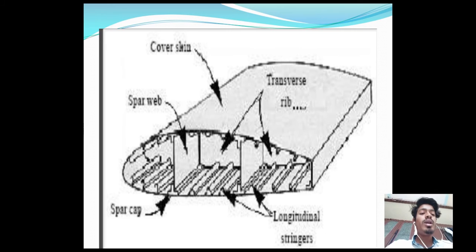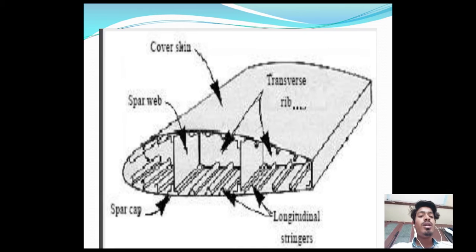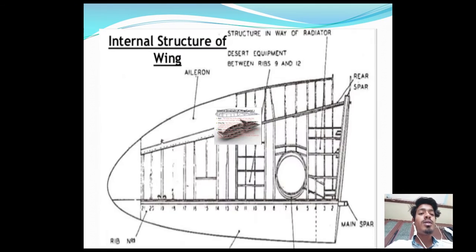Here we can see how the metal surface covers the spars and ribs to get the wings. The internal structure of a wing includes a cover skin, transverse ribs, longitudinal stringers, and spar caps. This shows the internal structure of the wing.